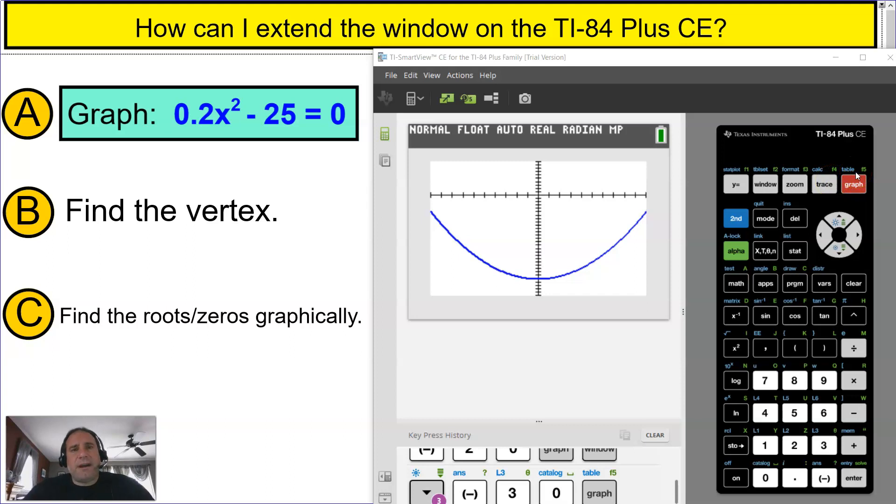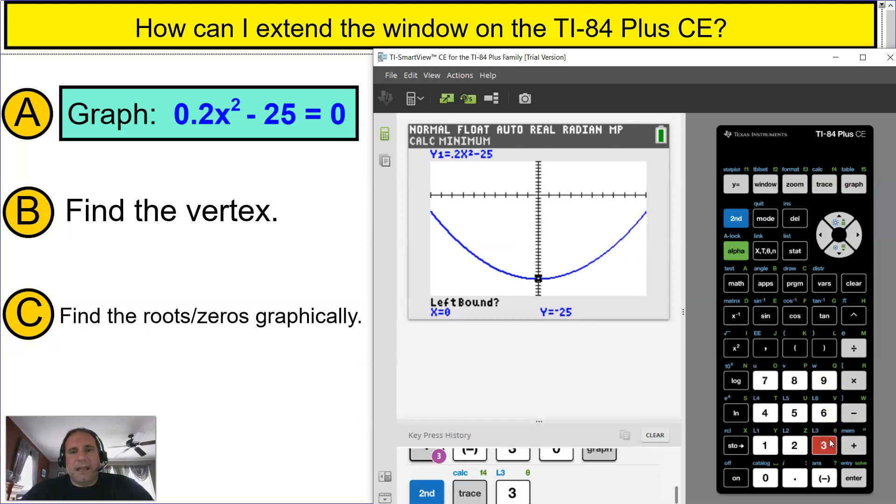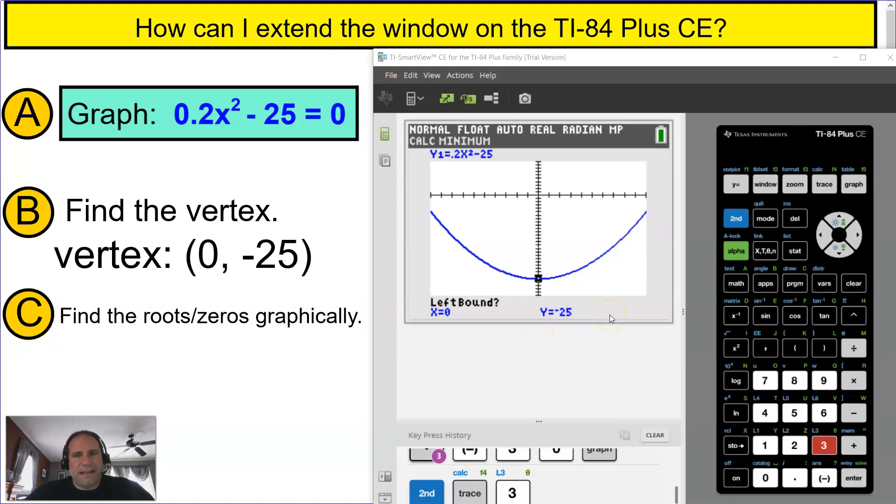Since this is a parabola that opens up, it has a minimum, and the way we get the vertex quickly is second function trace. And it's a minimum because it's facing up. The vertex is at the lowest point of that parabola. So you can press three, and it's giving you the vertex right off the bat. So you don't have to do left bound, right bound. It's right here. So that is the vertex: zero, negative 25.